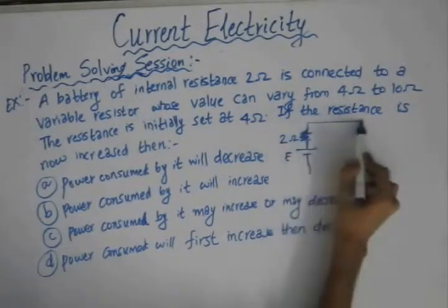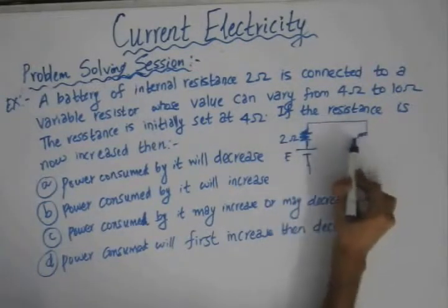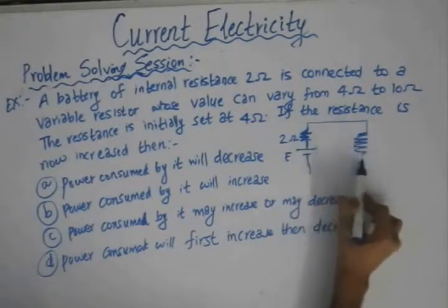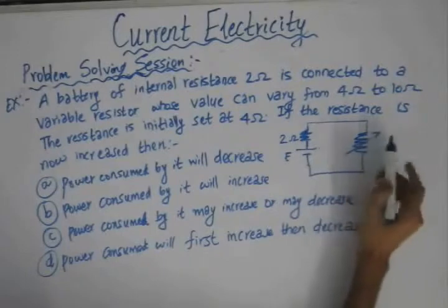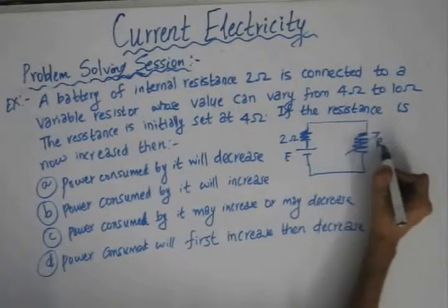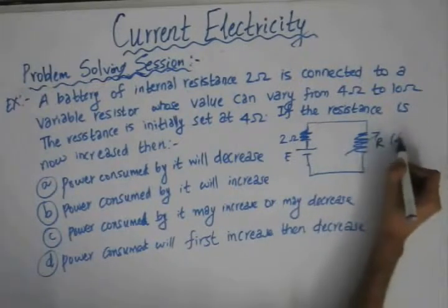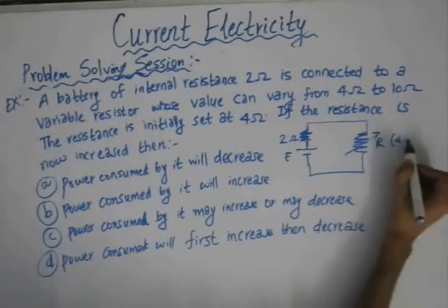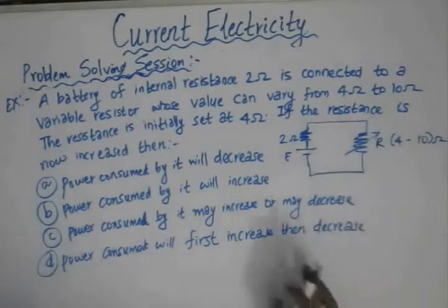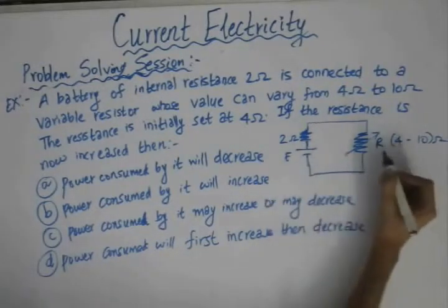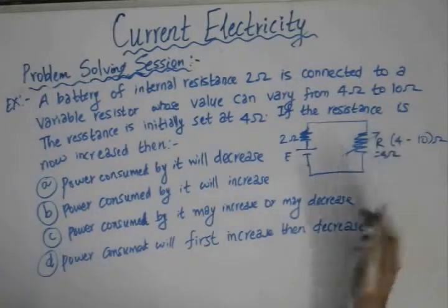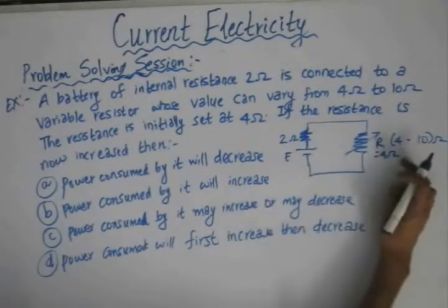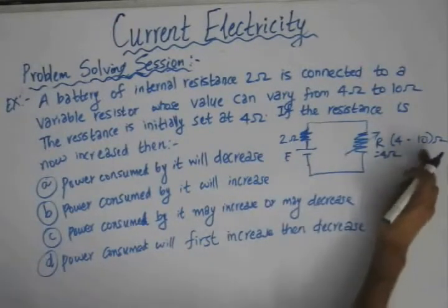And we have connected a variable resistor R, whose value varies from 4 to 10 ohm. Initially the value of the resistance is 4 ohm. Now they have asked, if the value of resistance is increased further to 10 ohm from 4 to 10 ohm, how the power across the resistance will vary.